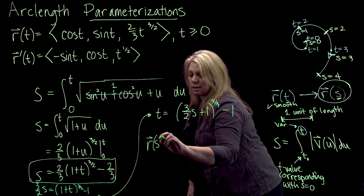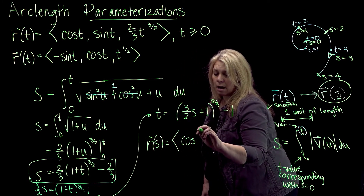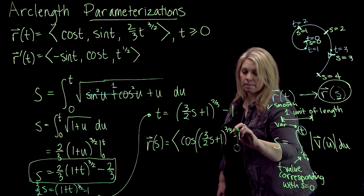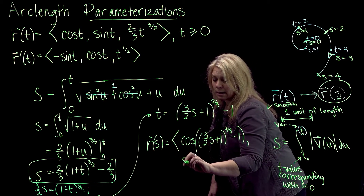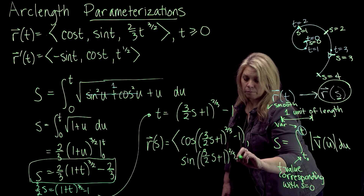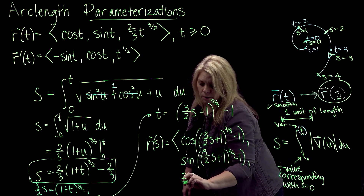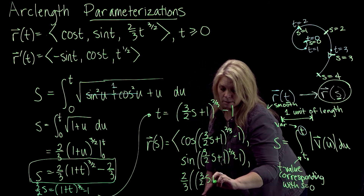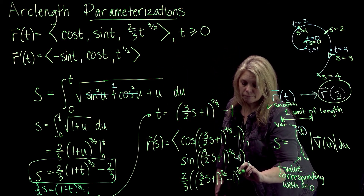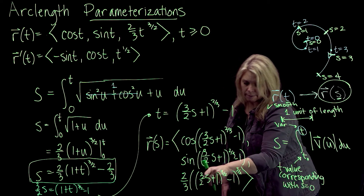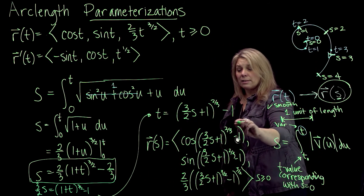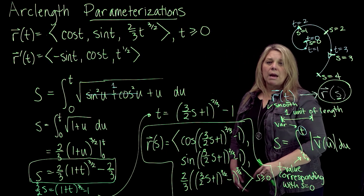The last step is to put this expression for T into the original parameterization in place of T. So R of S equals: cosine of [(3/2 S + 1)^(2/3) − 1] in the i component, sine of [(3/2 S + 1)^(2/3) − 1] in the j component, and two-thirds times [(3/2 S + 1)^(2/3) − 1]^(3/2) in the k component, for S greater than or equal to zero. That gives us our arc length parameterization.